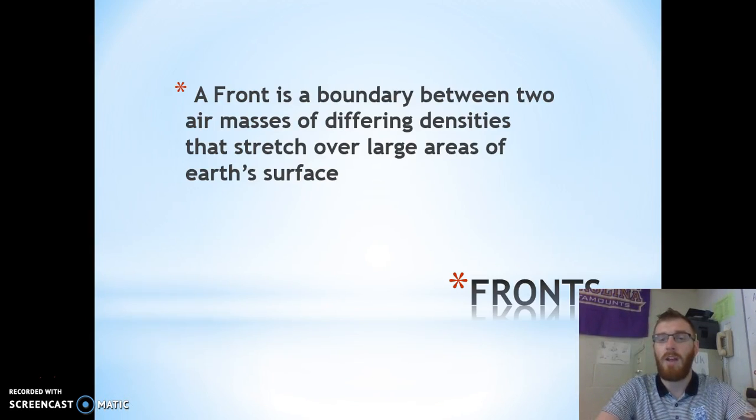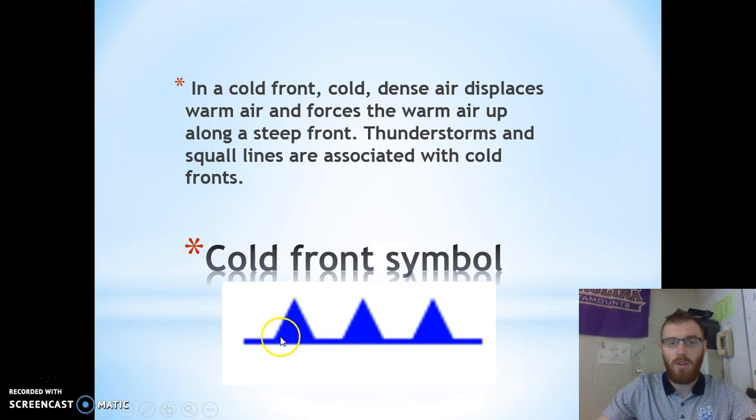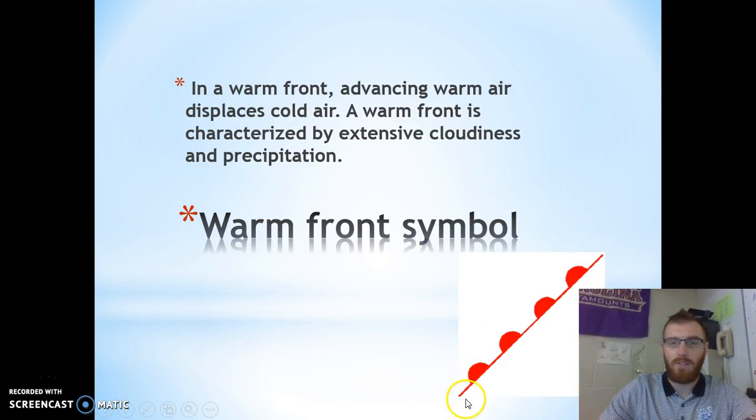As we talked about in the last one, a front is a boundary simply between two air masses. This is the symbol for the cold front. We remember what the cold front is from the last unit, so I'm just going to recover the symbols here. It is the blue one with the pointed teeth. The warm front is the red with the rounded teeth.